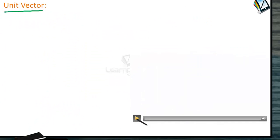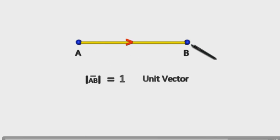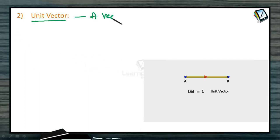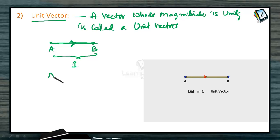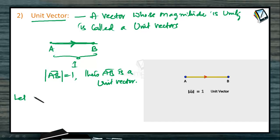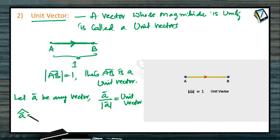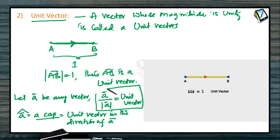Next, let us go to the unit vector. Understand this by means of this animation: A is a point and B is a point. If you draw the vector AB bar with the length between A and B equal to one, then it is called a unit vector. A vector whose magnitude is unity is called a unit vector. If A bar is any vector, then A bar divided by its magnitude gives a unit vector in the direction of A bar, denoted by A cap.